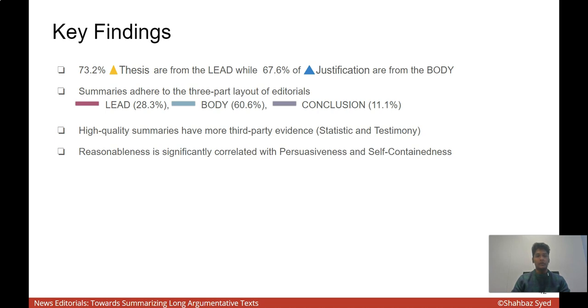In terms of dimensions, we found out that reasonableness was significantly correlated with persuasiveness and self-containness. This means a summary could sufficiently justify its thesis by selecting the most persuasive segments and also those segments which are self-contained and understandable and unambiguous.